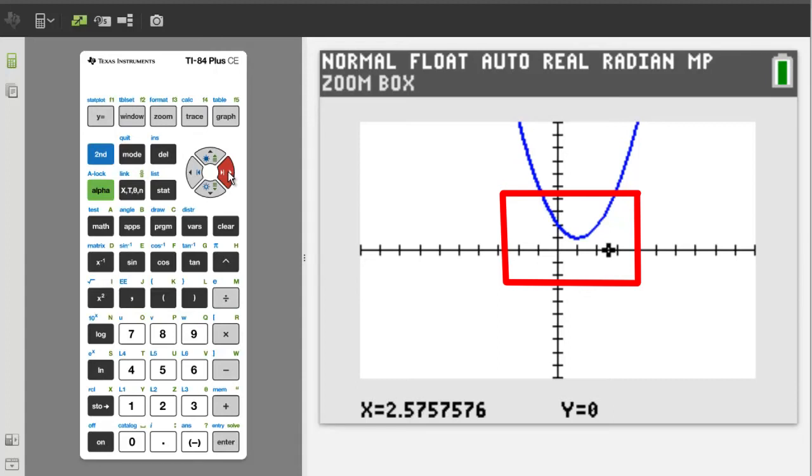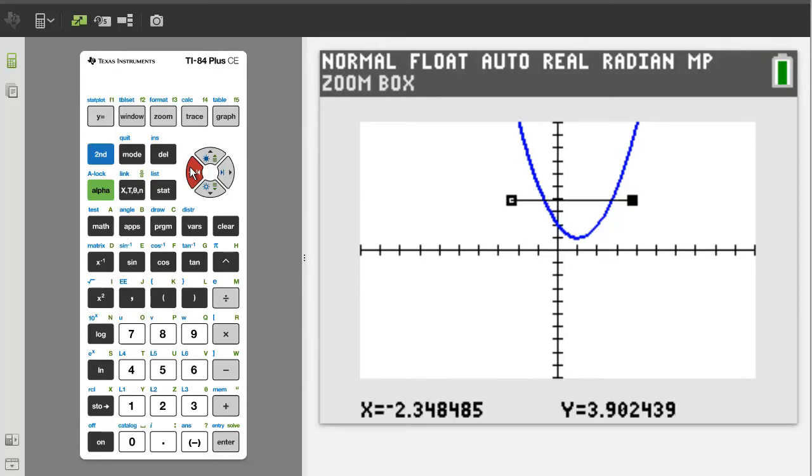With the arrow buttons, move the blinking cursor. I am going to start my box here, so press the enter button. I am going to move to the left by pressing the left arrow button. I am drawing the top of my zoom box. Now go down. This is the area I want to zoom in on. So press the enter button.